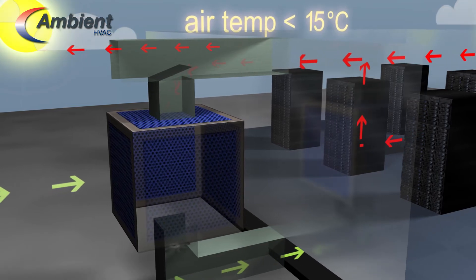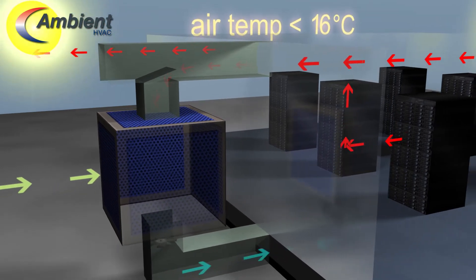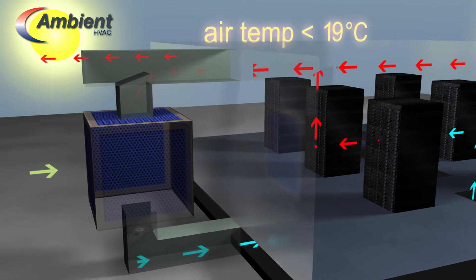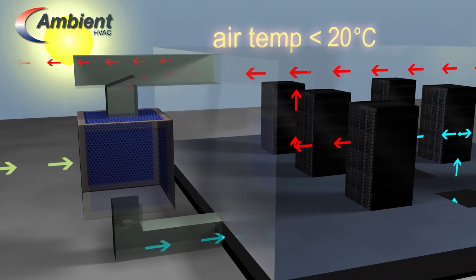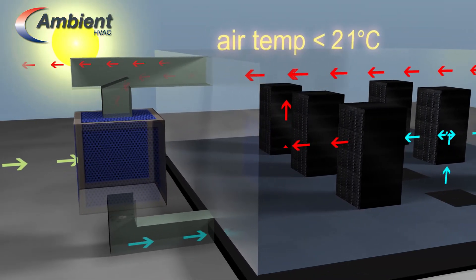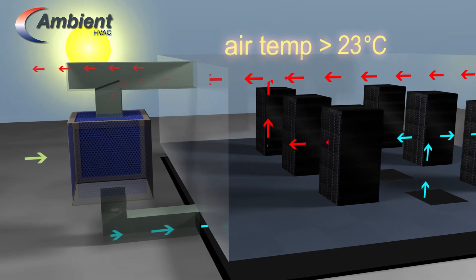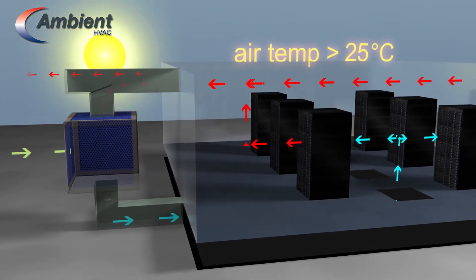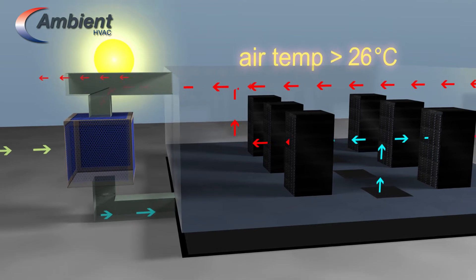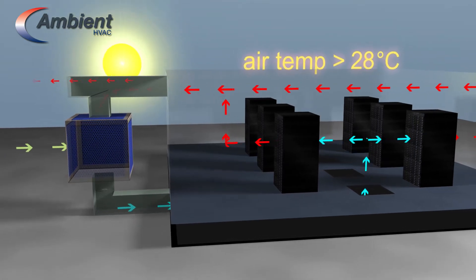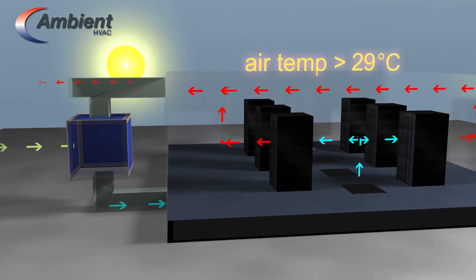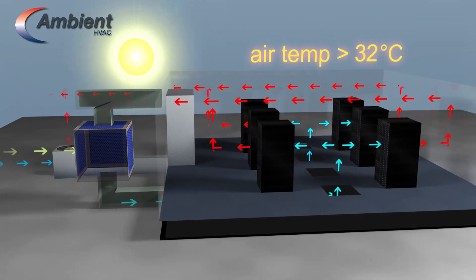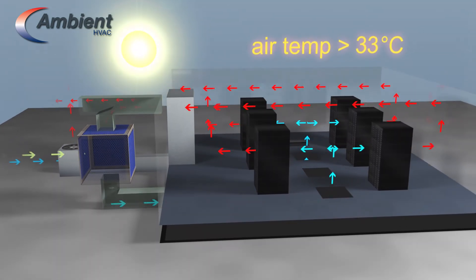As ambient temperatures continue to rise further, evaporative cooling is enabled. Mains water is pumped to the top of the evaporating unit and recirculated over water absorbent pads. Introduced air is cooled by the evaporative effect as it is drawn over them. Humidity can be accurately controlled. A CRAC can provide backup if ambient temperatures continue to rise further.